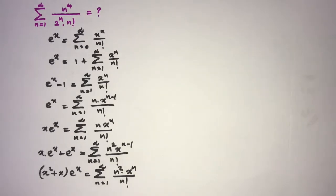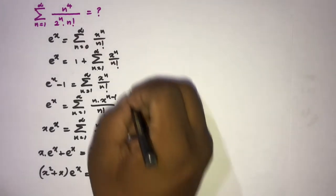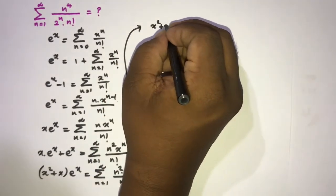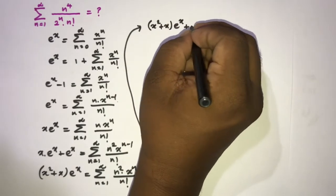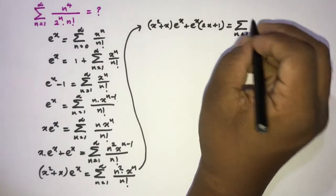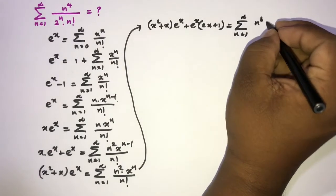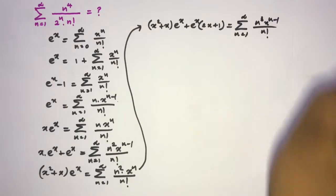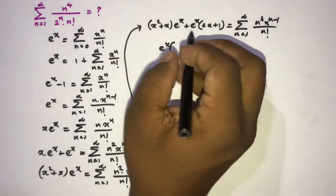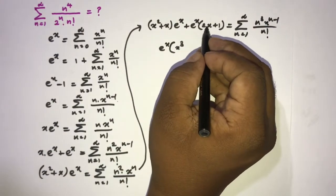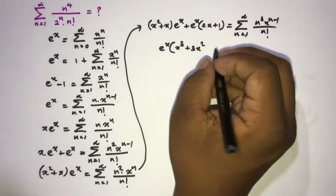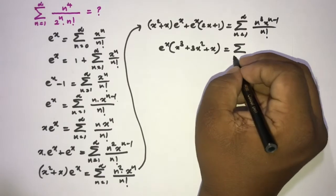Differentiate again using the product rule on (x²+x)·e^x: (x²+x)·e^x plus e^x·(2x+1), equals the sum from n=1 to infinity of n³·x^(n-1) over n factorial. Taking e^x as a common factor and multiplying by x again, we obtain (x³ + 3x²+ x)·e^x equals the sum from n=1 to infinity of n³·x^n over n factorial.